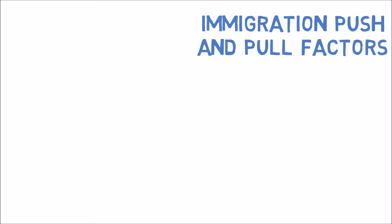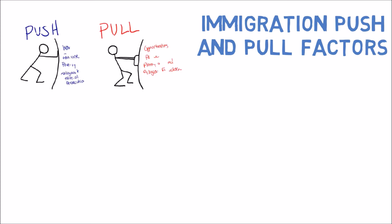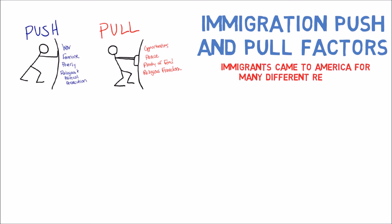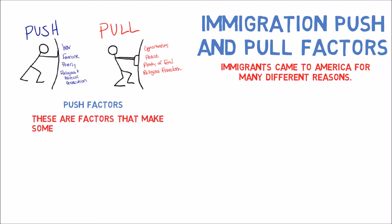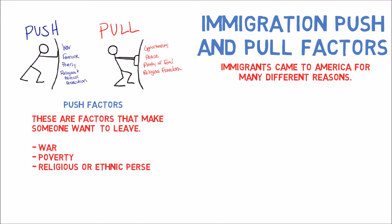Immigration push and pull factors. Immigrants came to America for many different reasons. Push factors are factors that make someone want to leave, such as war, poverty, religious or ethnic persecution, famine, and low wages.